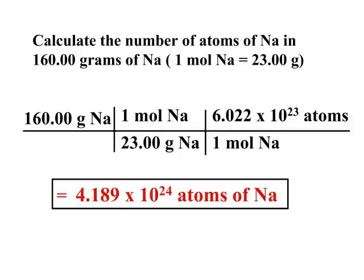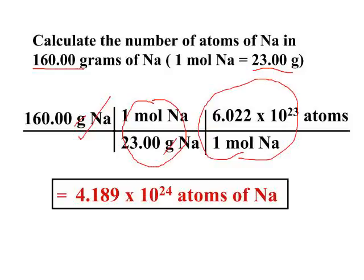Going the other direction — finding the number of atoms in 160 grams of sodium — the molar mass of sodium remains the same. Take the grams: first use the molar mass to get to moles, so grams of sodium cancel. Once at moles of sodium, use Avogadro's number — 1 mole equals 6.022 times 10 to the 23rd atoms — and now you have the number of atoms of sodium in 160 grams of sodium.